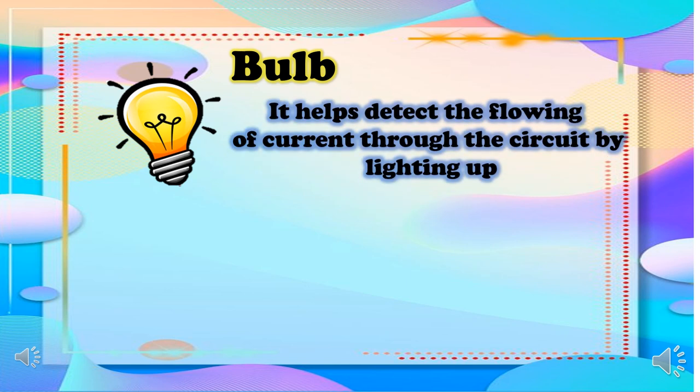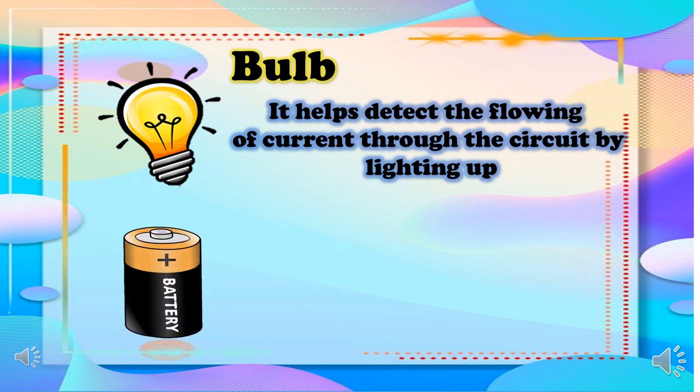Let us take a look at the picture. What is it? Yes, it is a bulb. It helps detect the flowing of current through the circuit by lighting up.